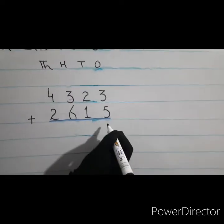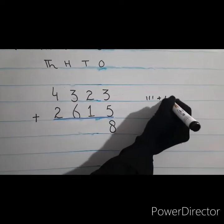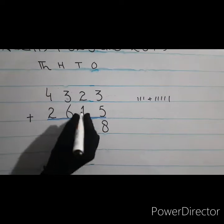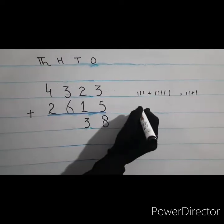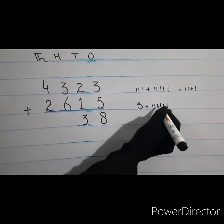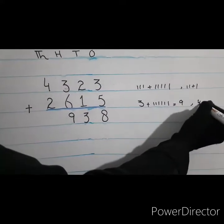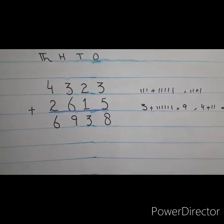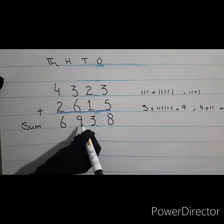Add the ones digit: three plus five equals eight. You can draw lines in rough work to count. Then two plus one makes three for the tens. Three hundred plus six hundred: draw lines — that makes nine hundred. And four thousands plus two thousands make six. So the sum is six thousand nine hundred thirty-eight.